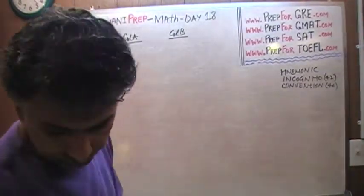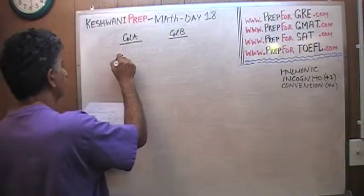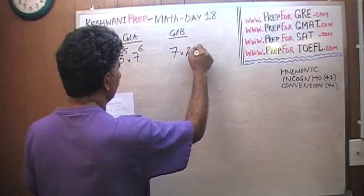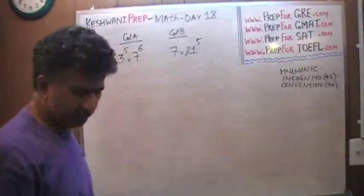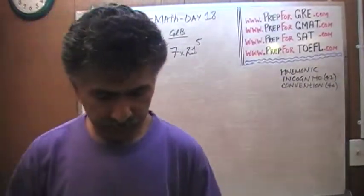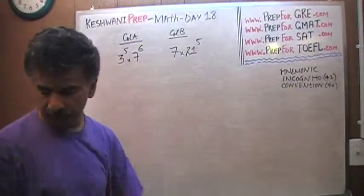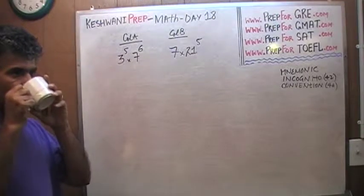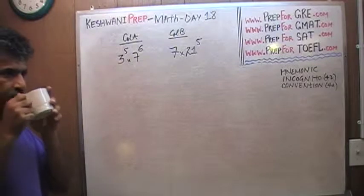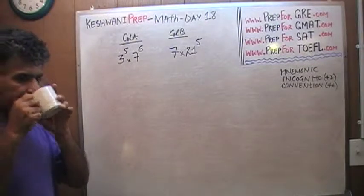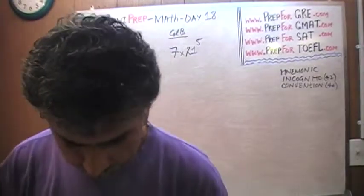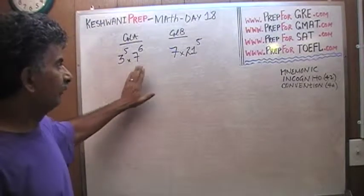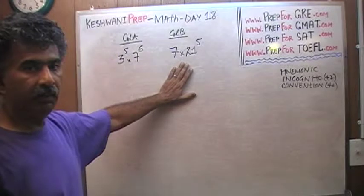Again, two quantities in two columns. The first column has 3 raised to the 5th times 7 raised to the 6th, and the other column has 7 times 21 raised to the 5th. Which quantity is bigger? Pause the video, solve the problem yourself, and resume when you have the answer. There are two ways you can solve this problem — you can manipulate Column A and see how it compares with Column B, or vice versa.